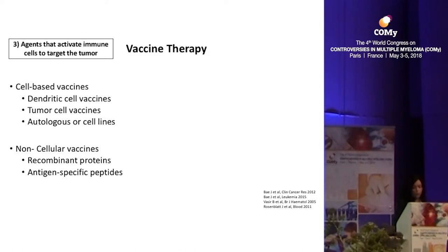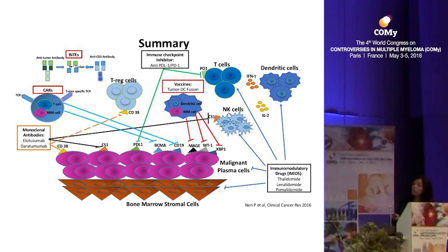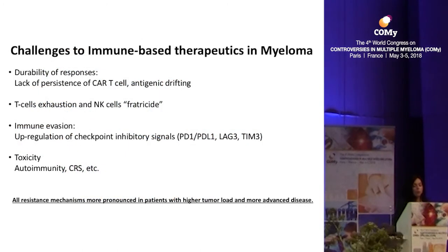To summarize, we have at least three different strategies available in myeloma: agents able to reactivate immune cells against the tumor — IMiDs and immune checkpoint inhibitors; monoclonal antibodies that directly target cancer cells; and agents that re-stimulate immune cells against the tumor. However, immunotherapy is not yet a home run. Challenges include: durability of response is still lacking, lack of persistence of CAR T cells, and antigenic drift noticed with CD38 and BCMA CAR T cells.